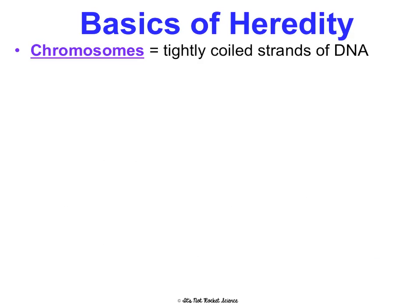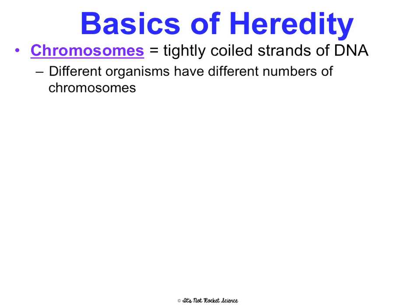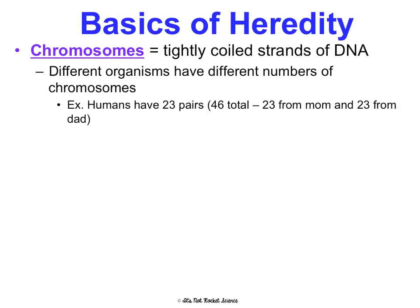Let's talk through the basics of heredity. Chromosomes are tightly coiled strands of DNA — if you take your DNA and tightly coil it up, you get a chromosome. Different organisms have different numbers of chromosomes. Humans have 23 pairs of chromosomes, 46 total — all of our genetic material is coiled up into those 46 chromosomes. 23 came from mom and 23 came from dad, which is why we say 23 pairs or 46 total.